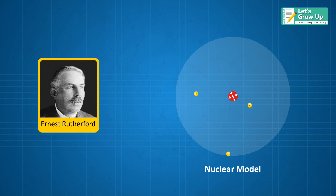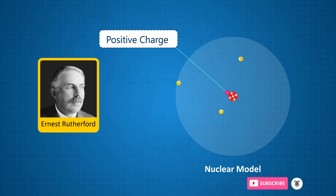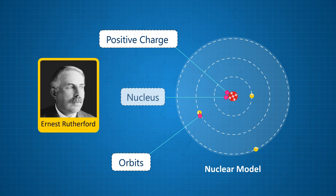In this model, he explained that the majority of the atom's mass is concentrated at the center of the atom, holding positive charge, while the electrons float around it in well-defined circular orbits. He called the positively charged center the nucleus.